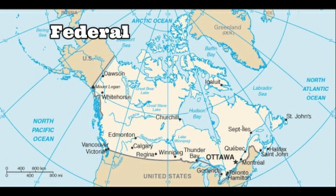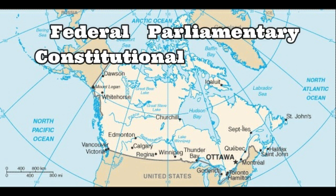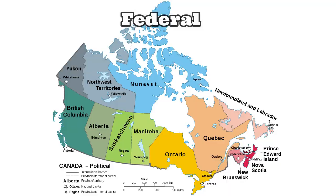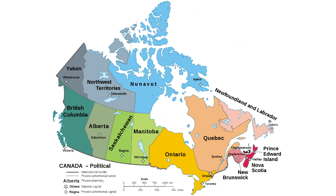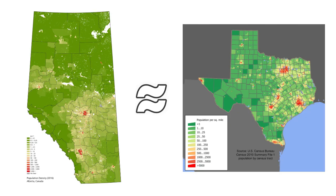Canada is a federal, parliamentary, constitutional monarchy. Federal just means the country is divided into smaller units that internally govern themselves, and are united under the federal, or national, government. Canada is divided into ten provinces and three territories, which, grossly oversimplifying here, are somewhat like states, although provinces do generally have less autonomy from the federal government than states do.